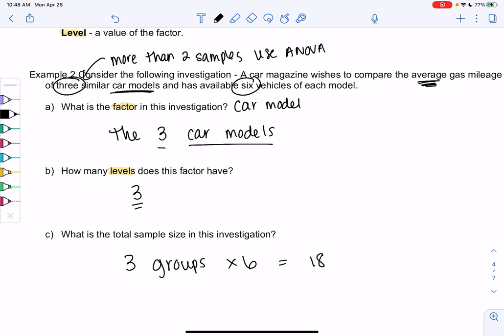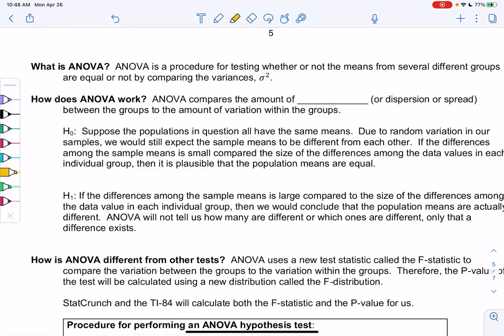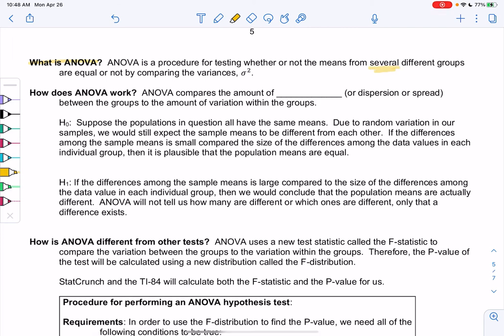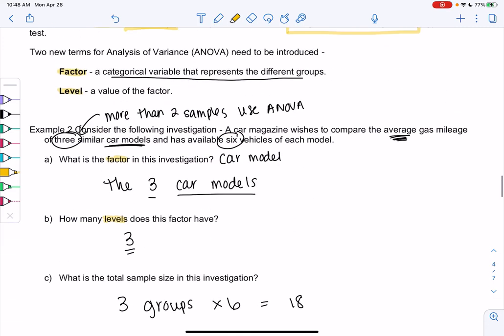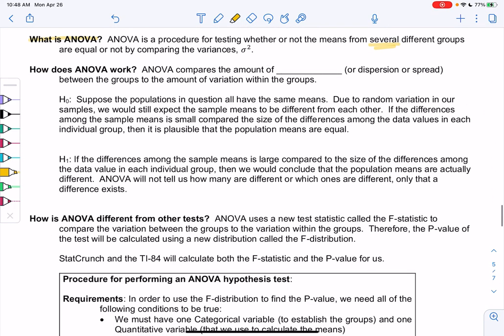The next page is going to have a lot of vocab. I'm just going to help you highlight the most important parts. So what is ANOVA? ANOVA is a very weird test and it's very complicated what's going on behind the scenes. But it's a procedure for testing whether or not the means from several groups are equal by comparing the variances, which is σ². That's the square of the standard deviation. So that's where it comes up as analysis of variance. In a weird way, it's comparing the means by looking at the variance.